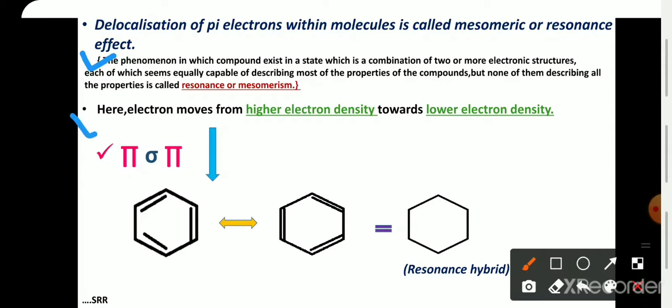In mesomeric effect, the electrons move from higher electron density towards lower electron density.